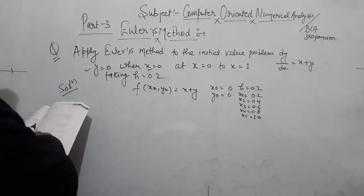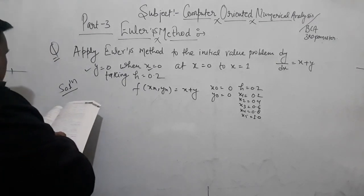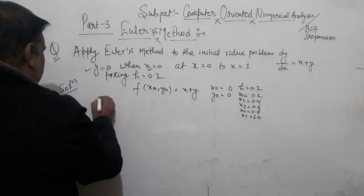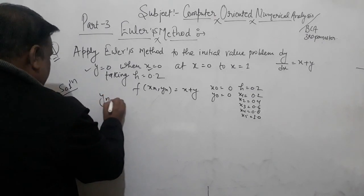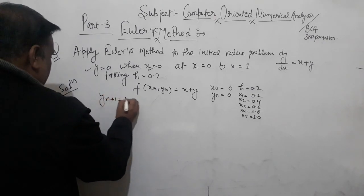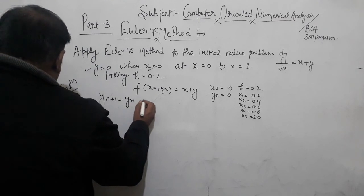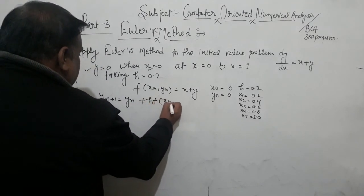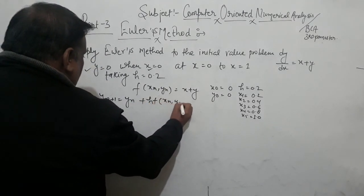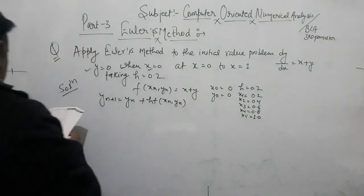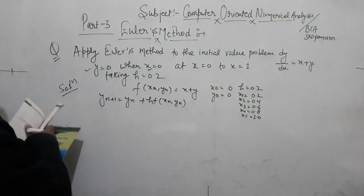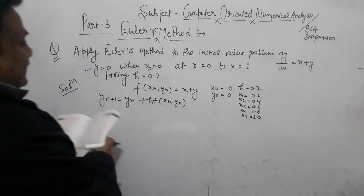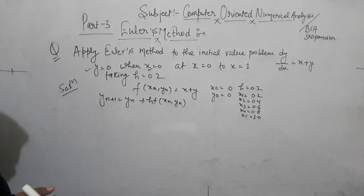So this formula — our Euler's method — we have to write: y(n+1) is equal to yn plus h·f(xn, yn). This is our Euler's formula, and the first value is Y1.